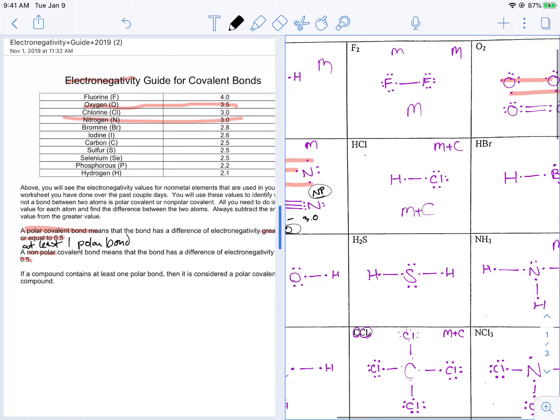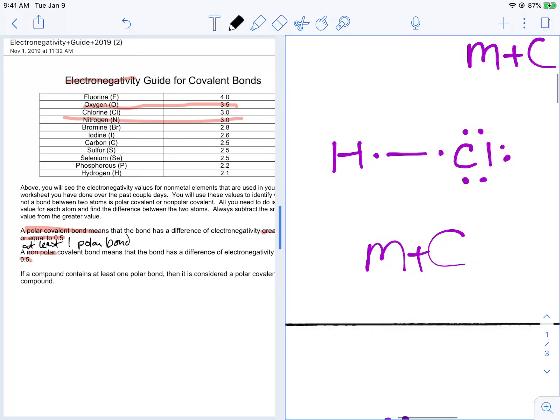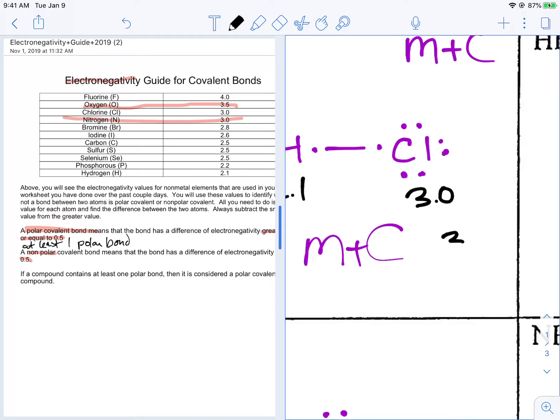Now let's do HCl. What's this guy going to be? H is 2.1. And chlorine is 3.0. Again, take the bigger number minus the smaller. So 3.0 minus 2.1 is equal to 0.9. That is greater than or equal to 0.5, so that is a polar compound.